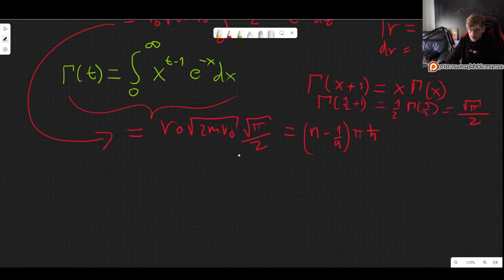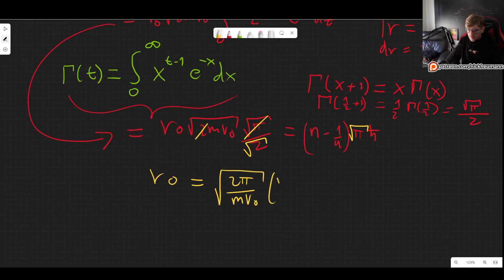So from here R0, let's see maybe we can do a few simplifications. So this square root of two and this will cancel out a little bit. This square root of pi and this and I think that's it. So R0 this will give us the square root of 2 pi over m V0 times n minus one fourth h bar.